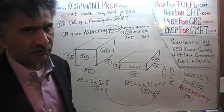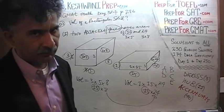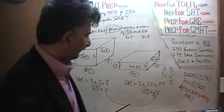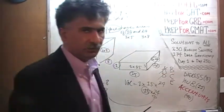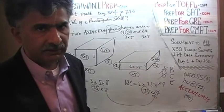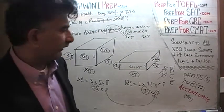Now that we have established that the first statement by itself is not enough, we know it cannot be A or D. It would have to be either B, C, or E. Let's look at the second statement.